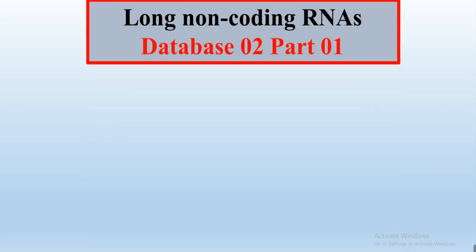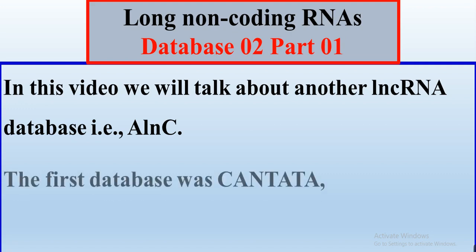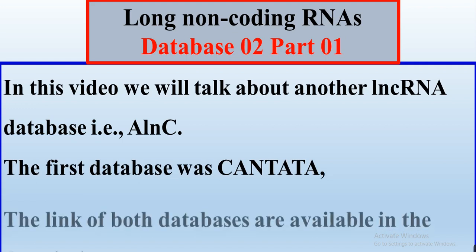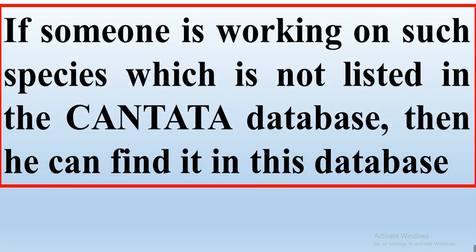This video is about long non-coding RNAs and it covers database 2, part one. We will talk about another long non-coding RNA database called ALNC. The first database was Cantata — the link for that database is available in the video description, and so is the link for this database. If someone is working on a species not listed in Cantata, they can find it in ALNC along with its related long non-coding RNAs.